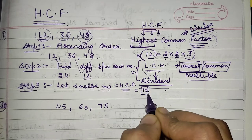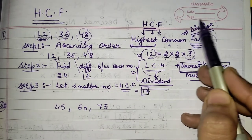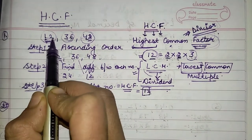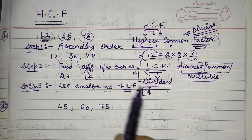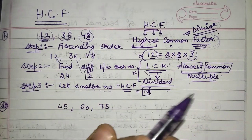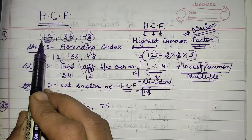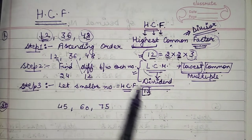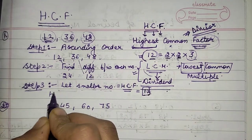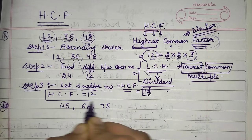For example, suppose we have 12, 36, and 48. The differences are 24 and 12, so the smallest difference is 12. Since HCF is a divisor, 12 should divide each and every value. 12 divides 12, 36 is divided by 12, and 48 is divided by 12 also. So our HCF is 12.